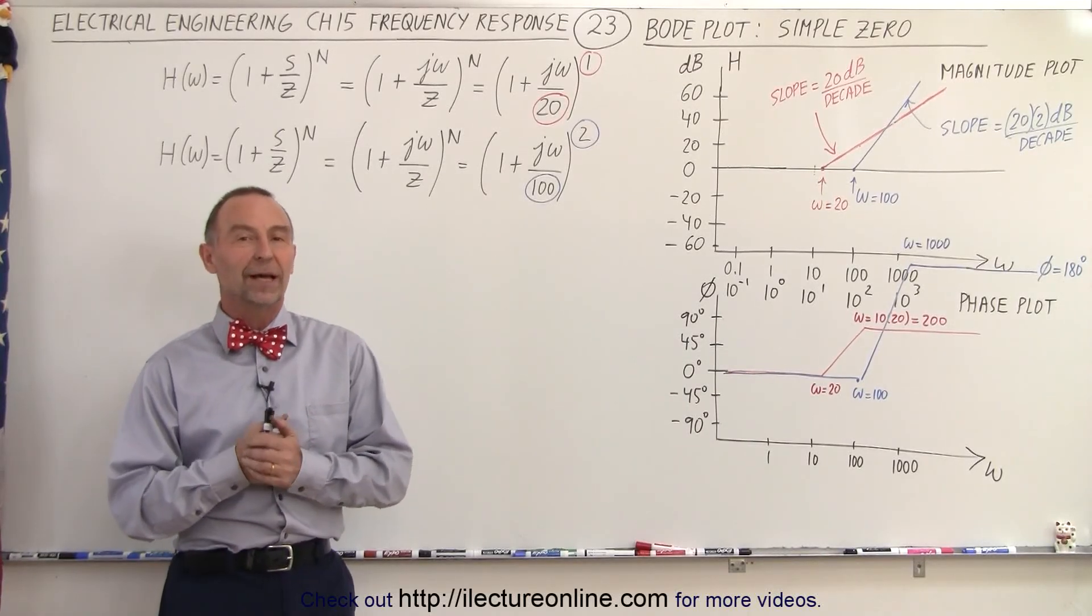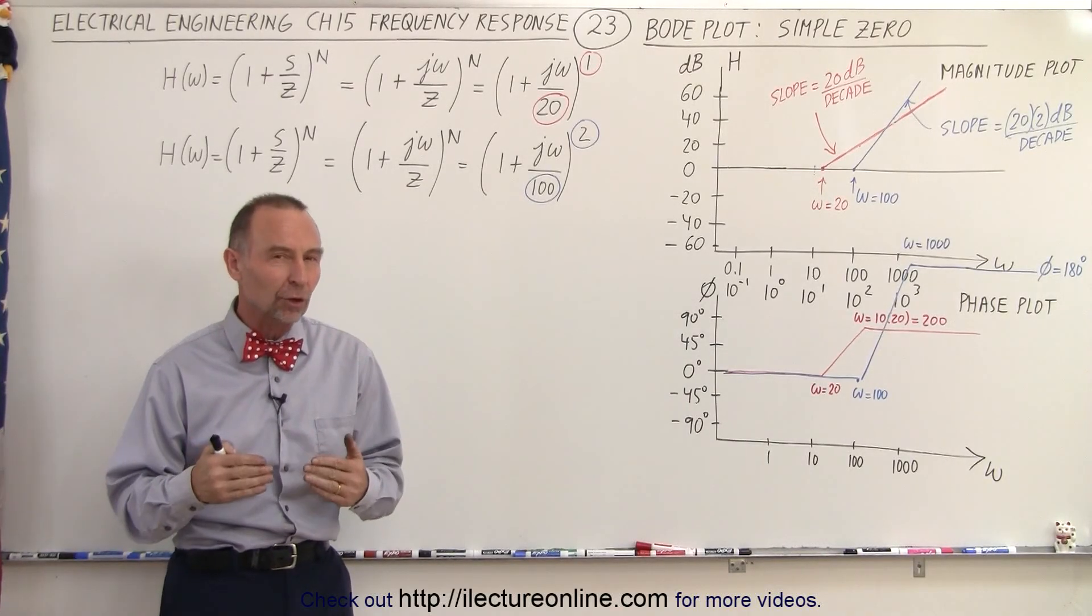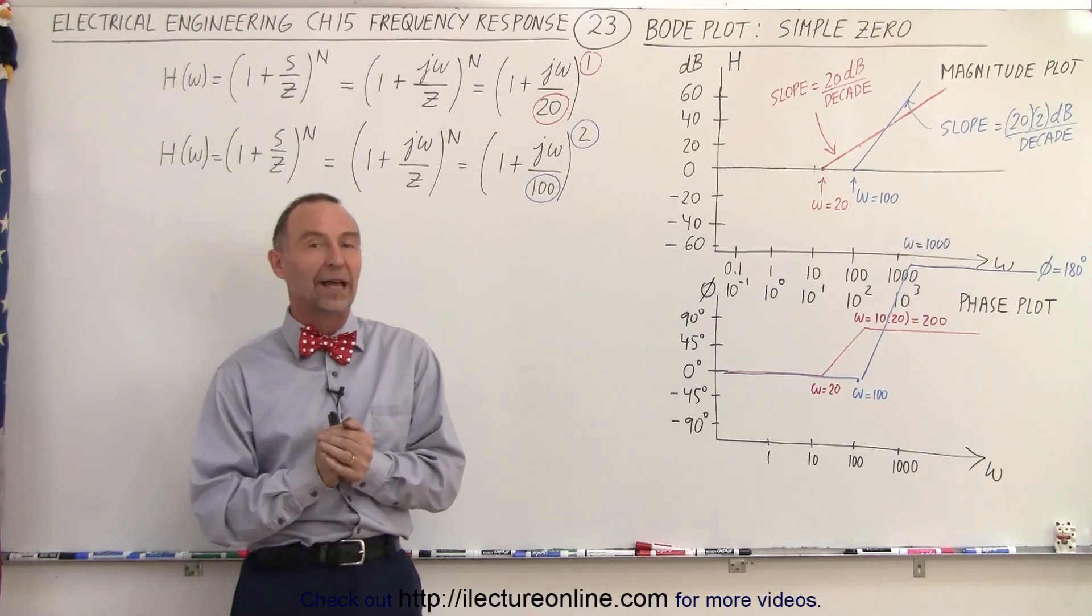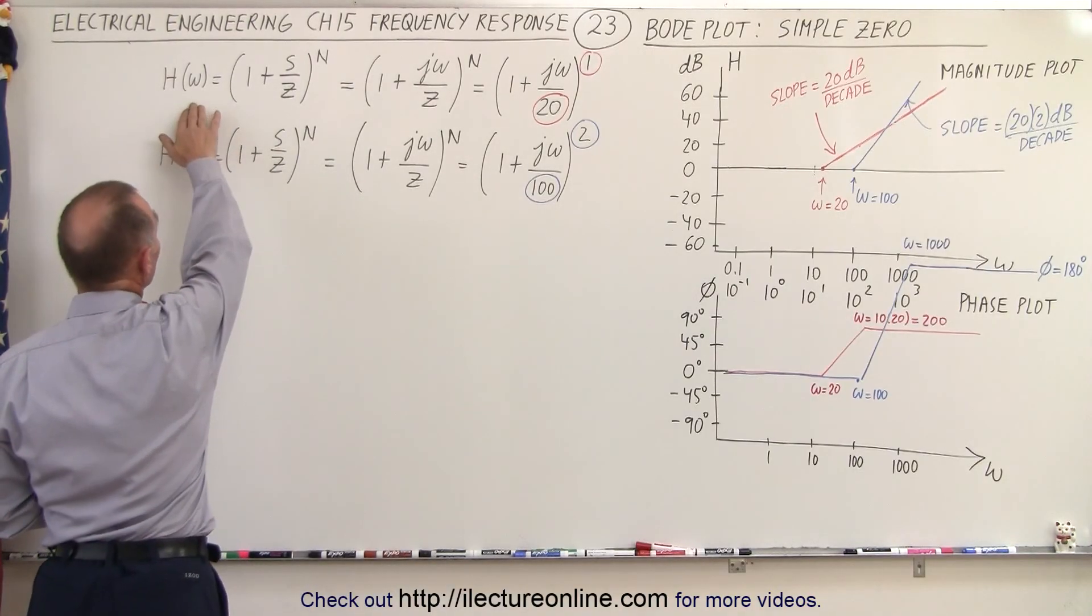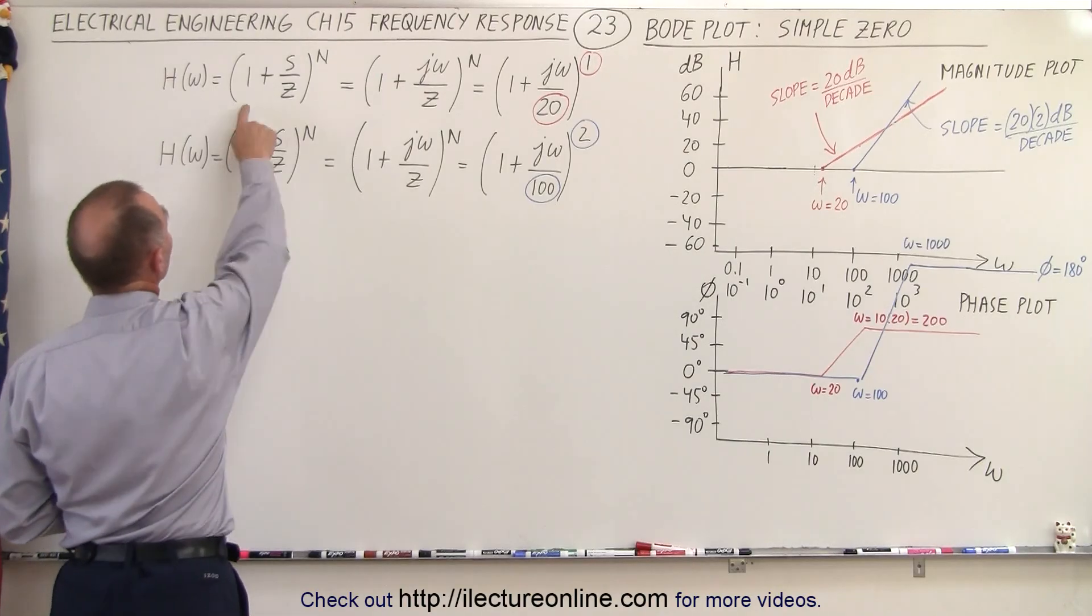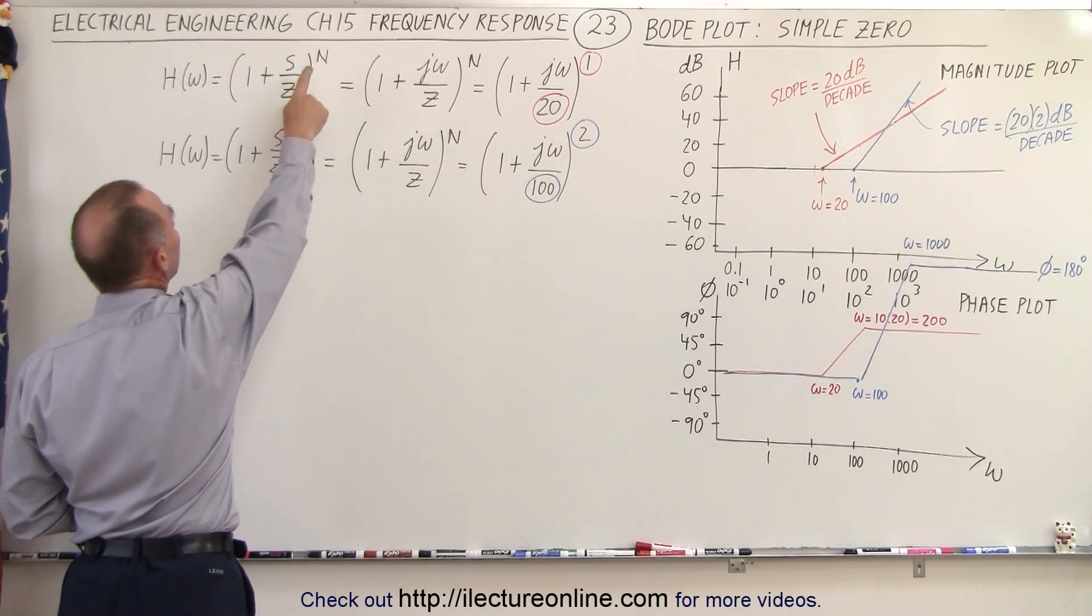Welcome to ElectronLine. Now let's take a closer look at what a Bode plot looks like for a simple zero. So here we have a very simplified equation for the transfer function: 1 plus s over z to the n power.